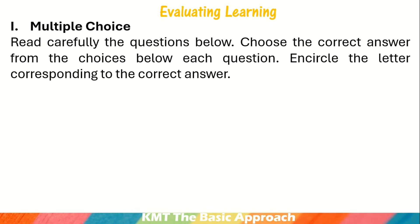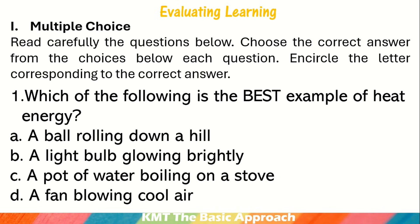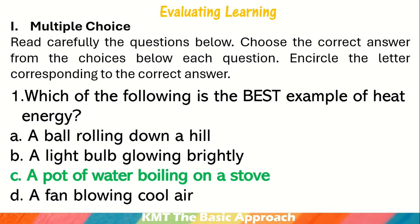Evaluating Learning. Multiple choice — read carefully the questions below and choose the correct answer. Number 1: Which of the following is the best example of heat energy? A. A ball rolling down a hill. B. A light bulb glowing brightly. C. A pot of water boiling on a stove. D. A fan blowing cool air. The correct answer is letter C: a pot of water boiling on a stove.